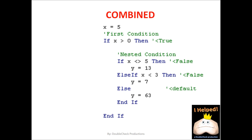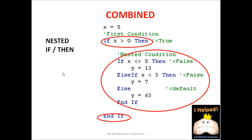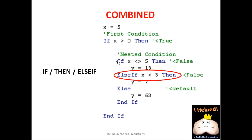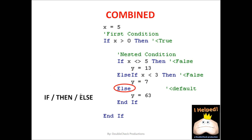Now we're going to combine all of our conditional statements. We start with x equals 5. Notice we have a nested series of conditions, an else-if statement, and a default value. We ask: is x greater than 0? Yes. Is it not equal to 5? That comes to false, so we go to else-if. Is it less than 3? False. So we end up at the default value: y equals 63. In the end, y is assigned a value of 63 because we combined all of these conditional statements.